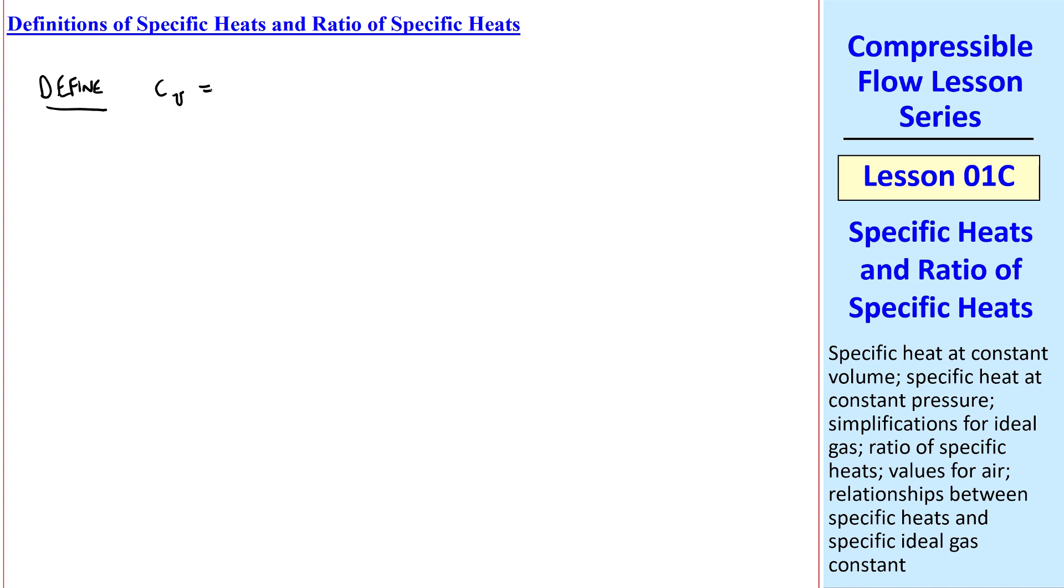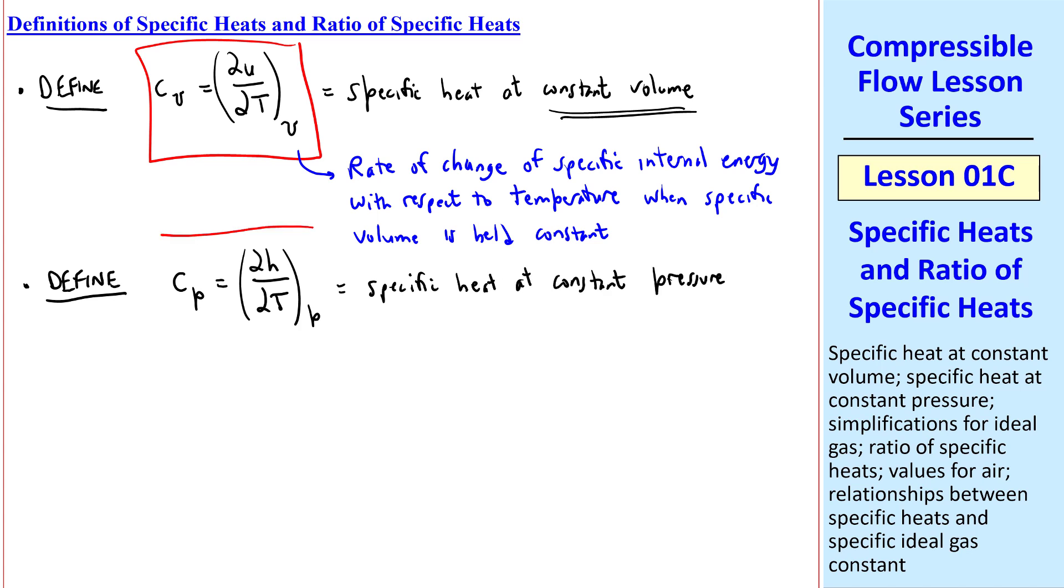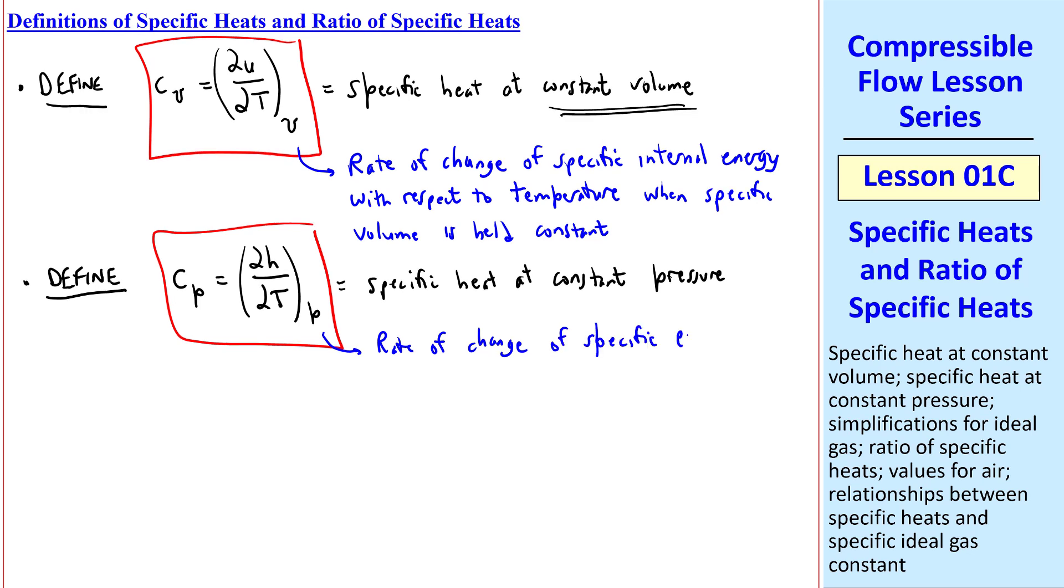First some definitions. We define Cv as del U del T with a subscript V, which indicates that this is the specific heat at constant volume, remembering that U is the specific internal energy. Cv represents the rate of change of specific internal energy with respect to temperature when the specific volume is held constant. That's what we mean by this subscript. Similarly, we define Cp as del H del T subscript P. This is the specific heat at constant pressure, defined as the rate of change of specific enthalpy with respect to temperature when pressure is held constant.